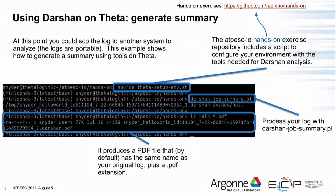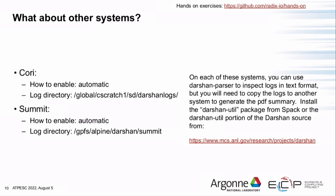To generate job summary plots, you'll need to use the setup environment script — the theta-setup-env script in the hands-on repo. We also generally recommend users copy the log file to their laptop where it may be easier to install Darshan dependencies. Once you source that setup script on Theta, you can run the Darshan job summary script directly. It's a Perl script that takes a Darshan log file as input and produces a PDF file with the same name and a PDF extension.